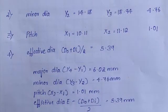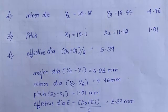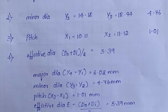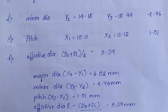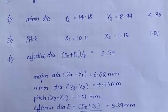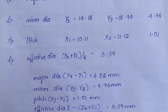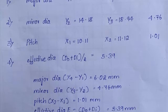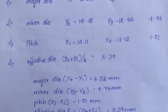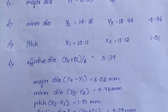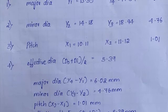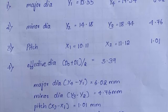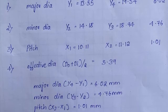As the recordings have been done, we have tabulated all the readings. In the particulars, major diameter y1 is 13.55, y4 is 19.54 and the actual value is 6.02. Minor diameter y2 is 14.18, y3 is 18.94 and the actual value is 4.74. Pitch x1 is 10.11, x2 is 11.12 and the actual value is 1.01.